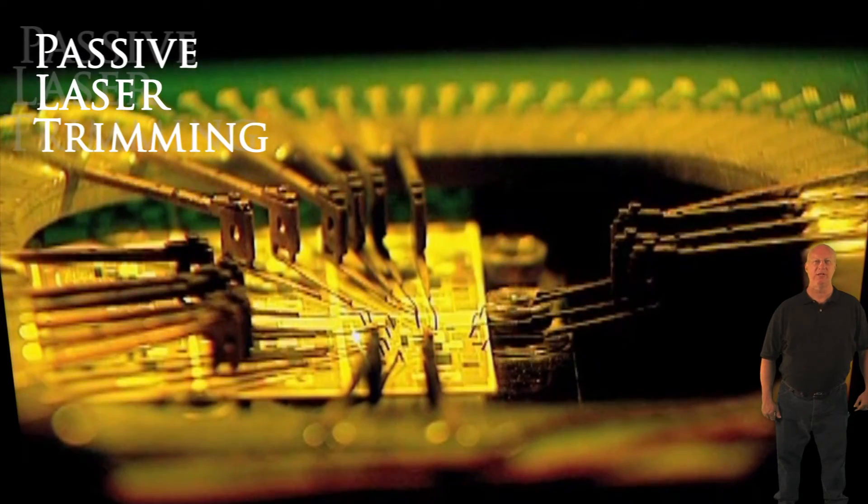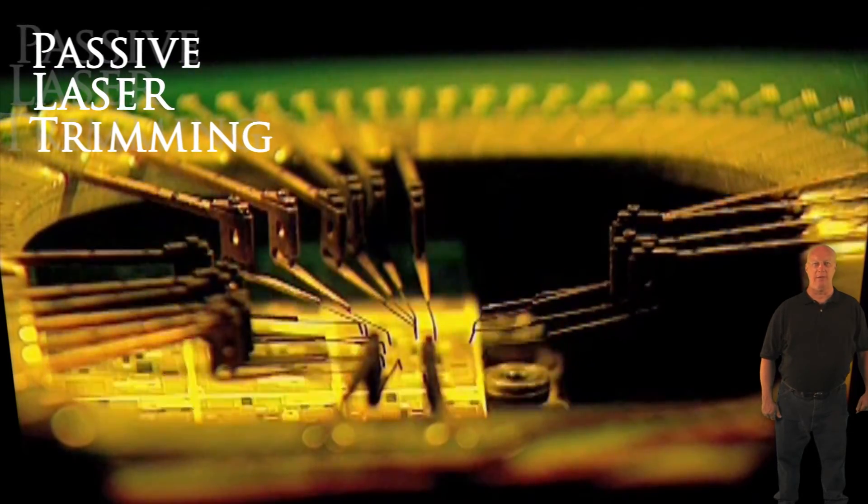lasers are used to trim precise amounts of the conductive material away. The second level is called active laser trimming and is used on fully assembled modules to precisely set the complete unit's output.